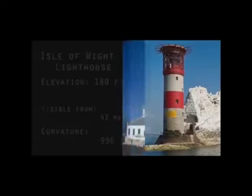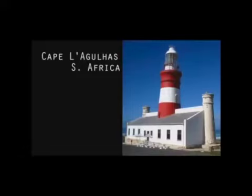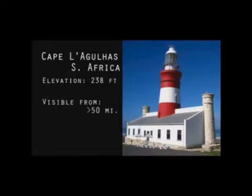Proof 89: The Cape Agulhas Lighthouse in South Africa is thirty-three feet high, two hundred and thirty-eight feet above sea level, and can be seen for over fifty miles. If the world were a globe, this light would fall one thousand four hundred feet below an observer's line of sight.